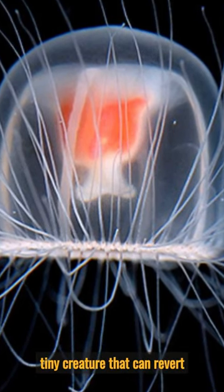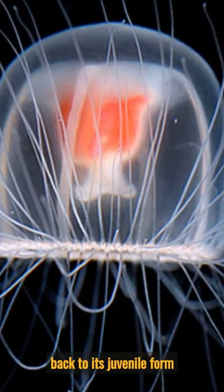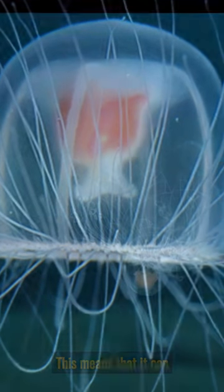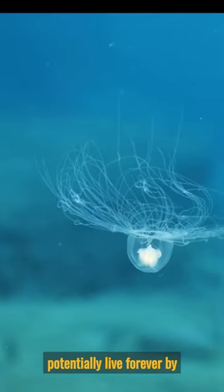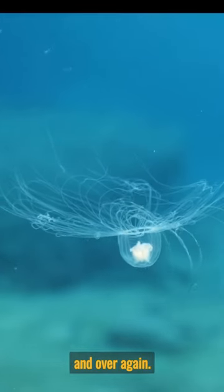a tiny creature that can revert back to its juvenile form after reaching maturity. This means that it can potentially live forever by cycling through its life stages over and over again.